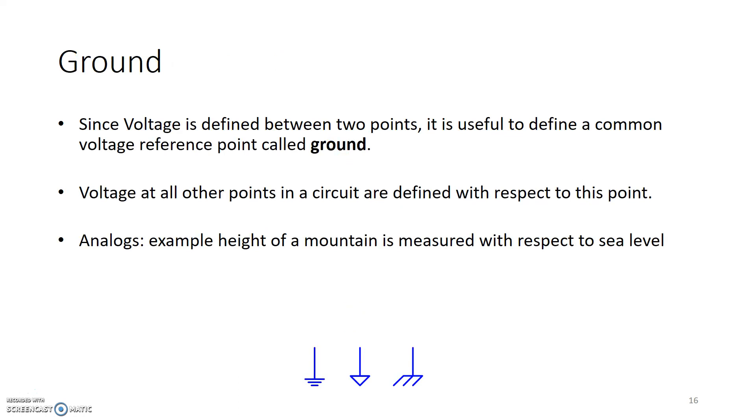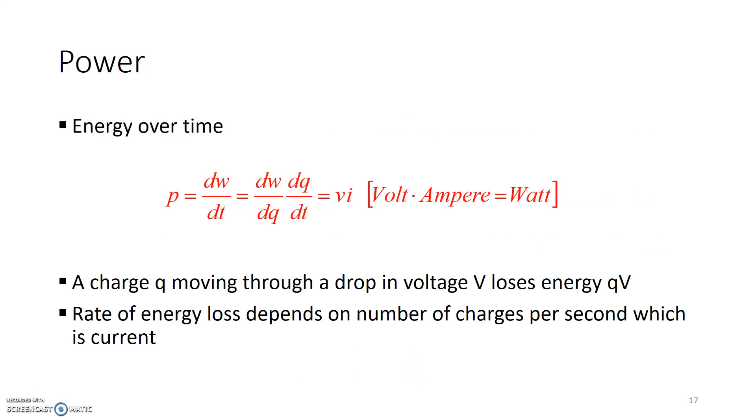Now, an important quantity is energy and power. Power is basically energy over time, and it's given as a product of voltage times current. If we can expand, voltage was defined as dW over dQ, meaning amount of energy required to move charge from point A to point B, and current was defined as amount of charge per unit time. So that gives power equals voltage times current. So that's power, and the unit of power is known as watt.